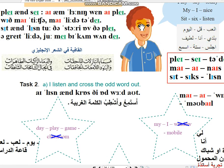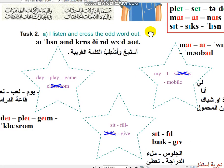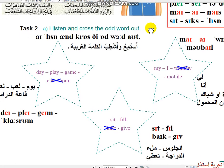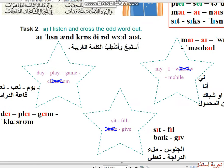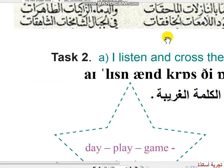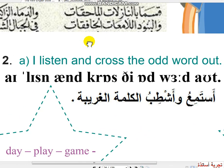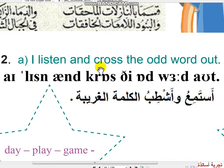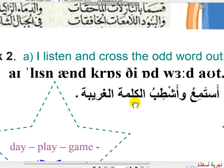هذي بالنسبة Task 1. Task 2: I listen and cross — أستمع وأشطب الكلمة الغريبة — I listen and cross the odd word out.